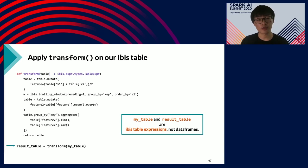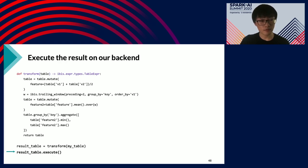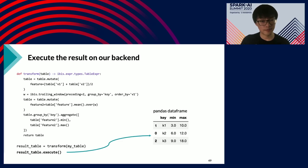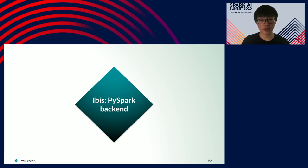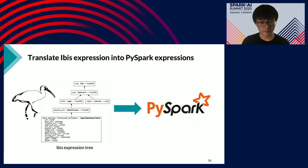If we recall our table transformation, we can wrap it in a function called 'transform' that takes an IBIS expression and returns another IBIS expression. In this way, we can use it on multiple backends — if my table is associated with the Pandas backend it will execute with Pandas, and if it's PySpark it will execute with PySpark. The key point is that my table and the result table are expressions, not DataFrames — making them flexible to be plugged into different backends. The backend goal is to turn an IBIS expression into a native expression — in this case, a PySpark DataFrame.